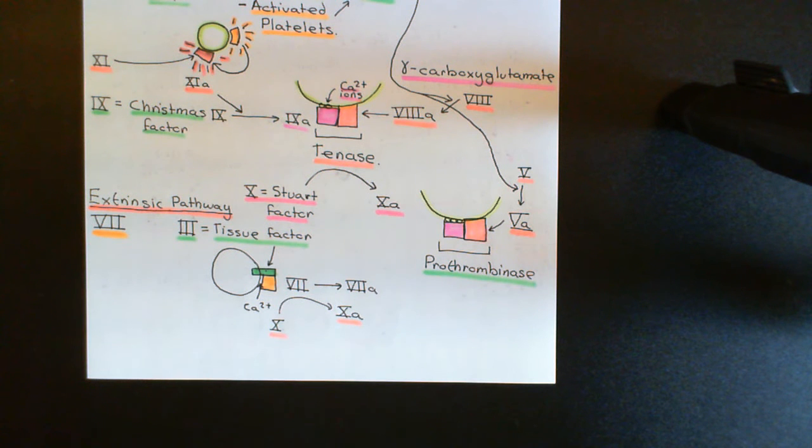So that then is the extrinsic pathway complete. It's another way of activating this conversion of fibrinogen into a fibrin mesh. We have now completed our discussion of hemostasis.